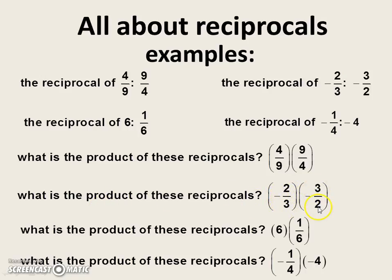What's the product of these reciprocals? Negative two-thirds times negative three-halves. What's the product of these reciprocals? Six times one-sixth. And what is the product of these reciprocals? Negative one-fourth and negative four.